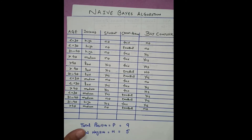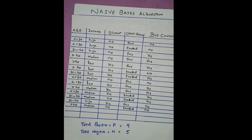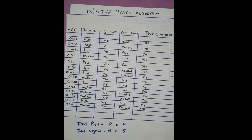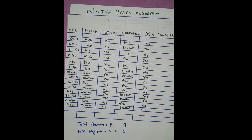Assalamu alaikum, welcome to Nasir Soft. In this video I will show you how we can implement the Naive Bayes algorithm. This is an example where we have data with attributes: age, income, student, credit rating, and buys computer. We have to predict whether, when age is less than or equal to 30 or something else, a user buys a computer or not.